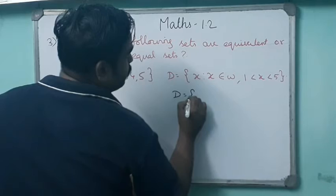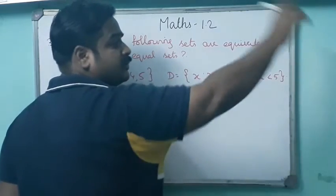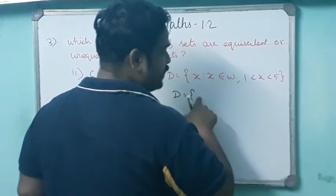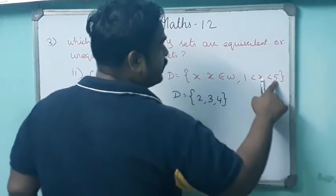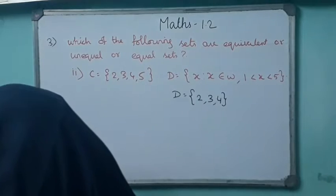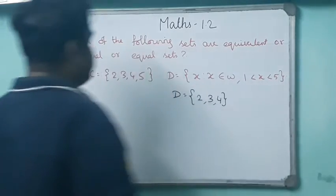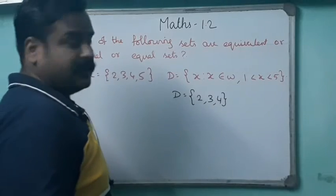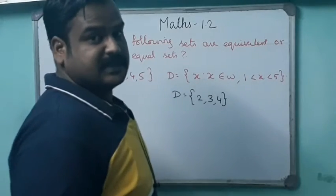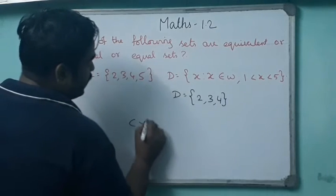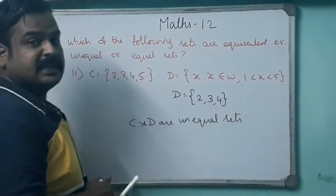For set D, x defines the element and x is a whole number. Whole numbers start from 0, 1, 2, 3, etc. With the condition 1 < x < 5, the values are 2, 3, 4. So set C has elements {2, 3, 4, 5} — four elements — and set D has elements {2, 3, 4} — three elements. The number of elements vary, so set C and set D are unequal sets.